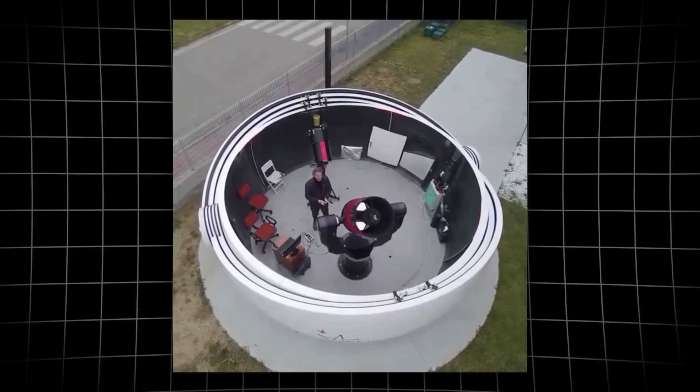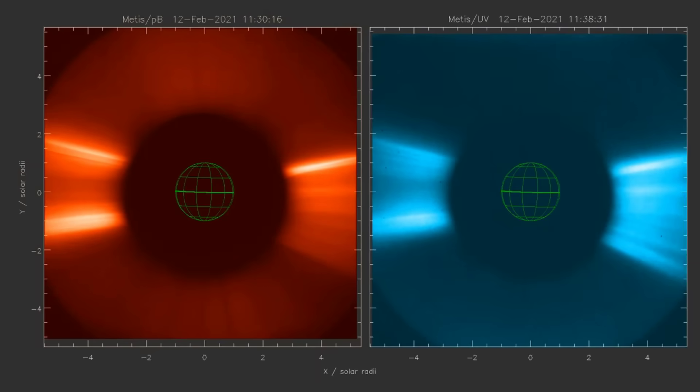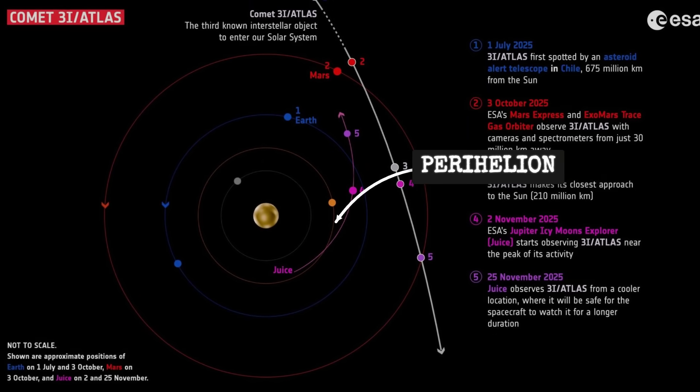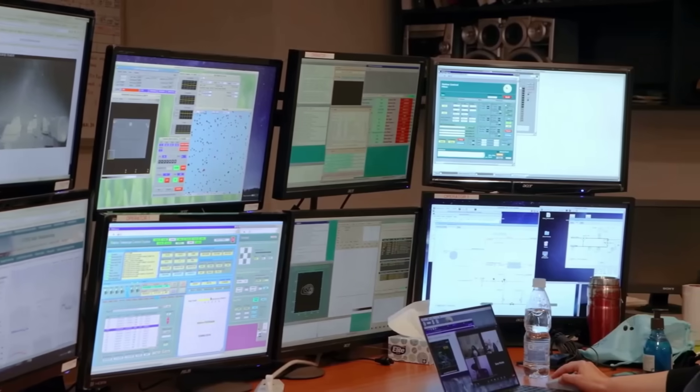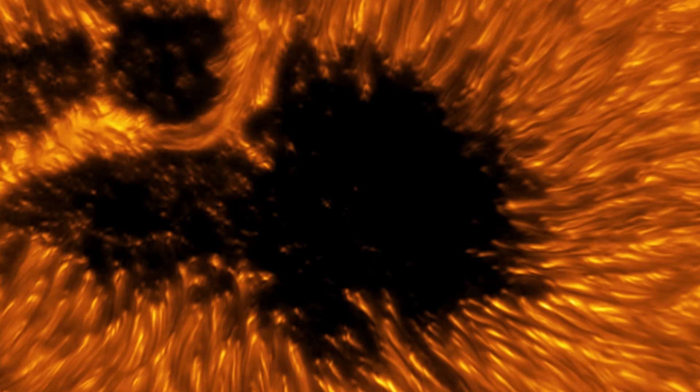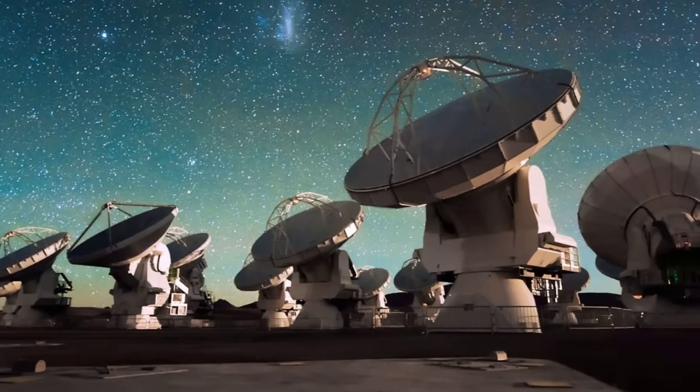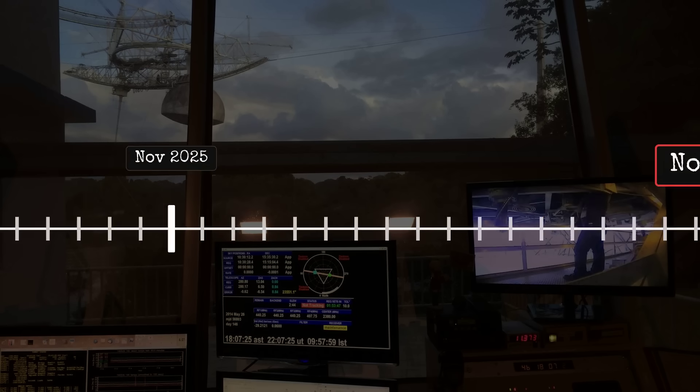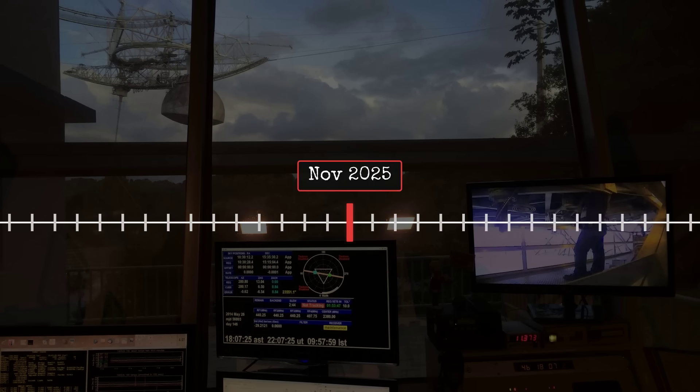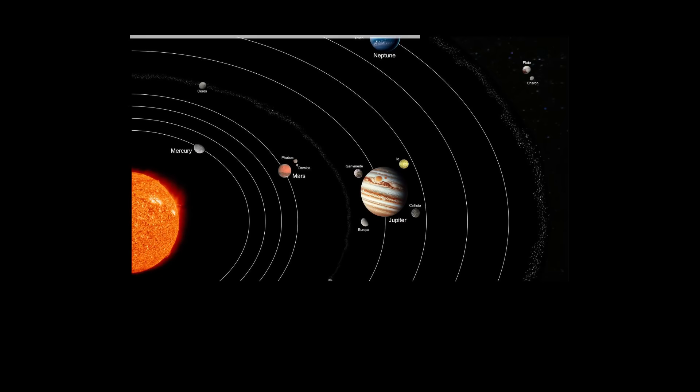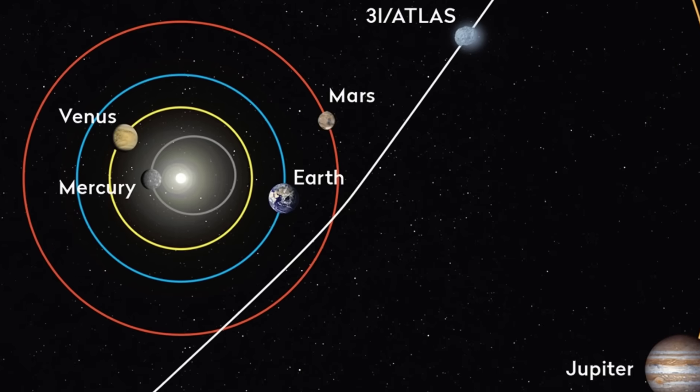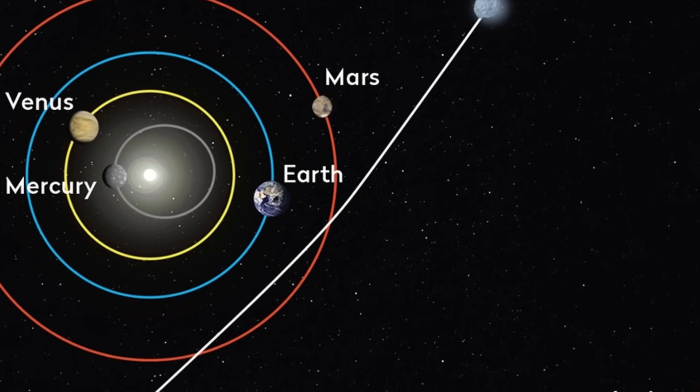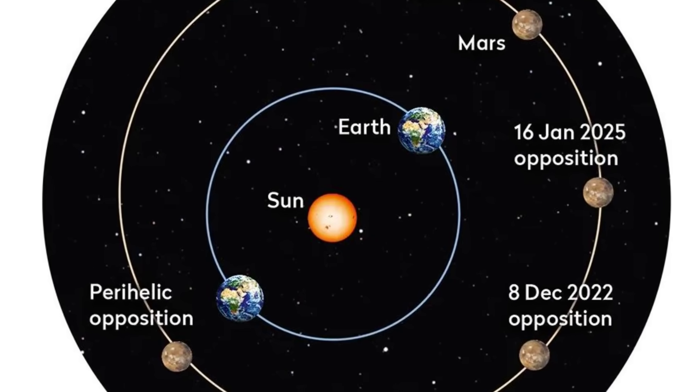For those of you hoping to observe 3I/Atlas, unfortunately, it's not possible right now. The object is too close to the sun's position in our sky, lost in the solar glare. Even with professional telescopes, we can't separate it from the sun's overwhelming brightness. We may start getting observations again in mid to late November, around November 20th to 25th, when 3I/Atlas will have moved far enough from the sun's position to be observable again. At that point, it will be moving outward, heading back toward Mars' orbit and eventually beyond.